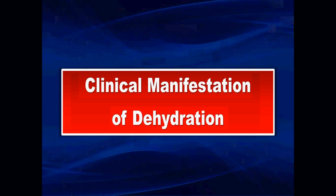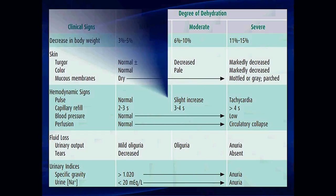The clinical manifestations of dehydration are the first step in assessing its degree. Dehydration is classified as mild (3–5% body weight loss), moderate (6–10%), or severe (more than 10%, up to 15%). Key parameters include skin turgor — assessed by abdominal skin pinch — which reflects tissue perfusion. A decreased or prolonged recoil after pinch indicates dehydration.